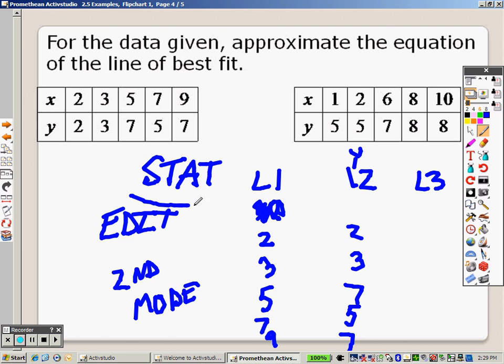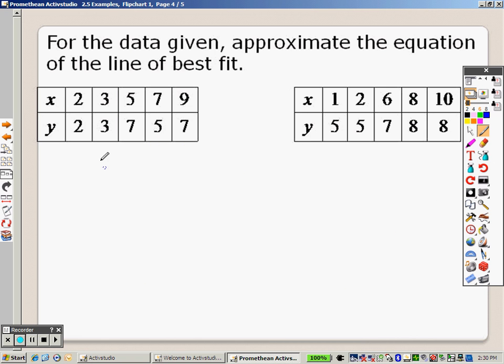Go back and press STAT again. Then press the arrow over and get to CALC. I think it's the fourth one down on your list. It says LinReg, AX plus B. I want you to press ENTER on that. You'll see that flashing on your screen. Press ENTER again one more time.